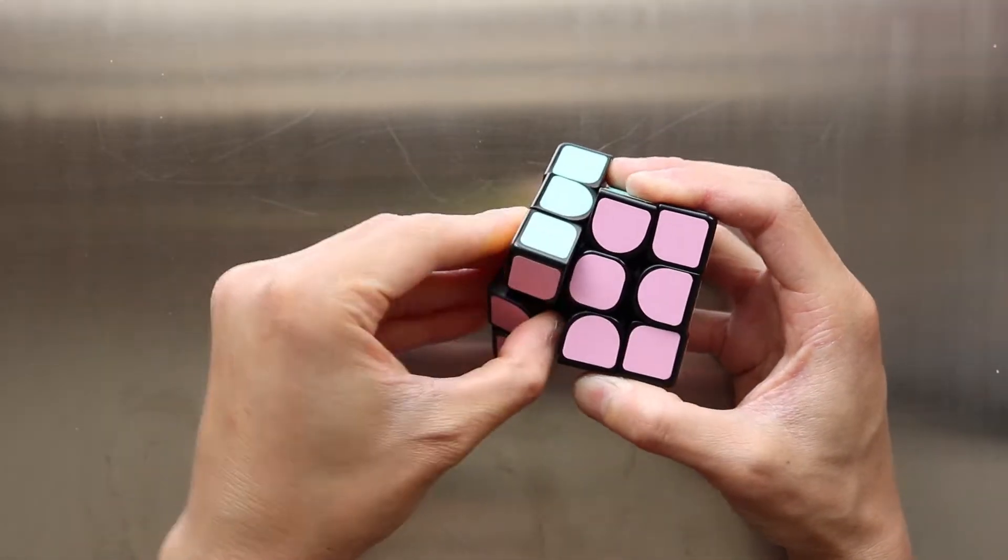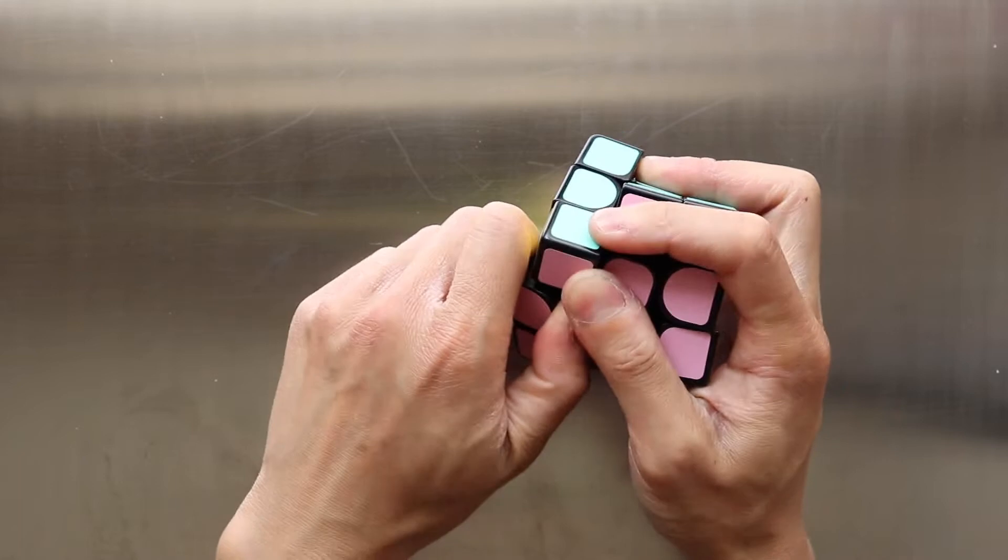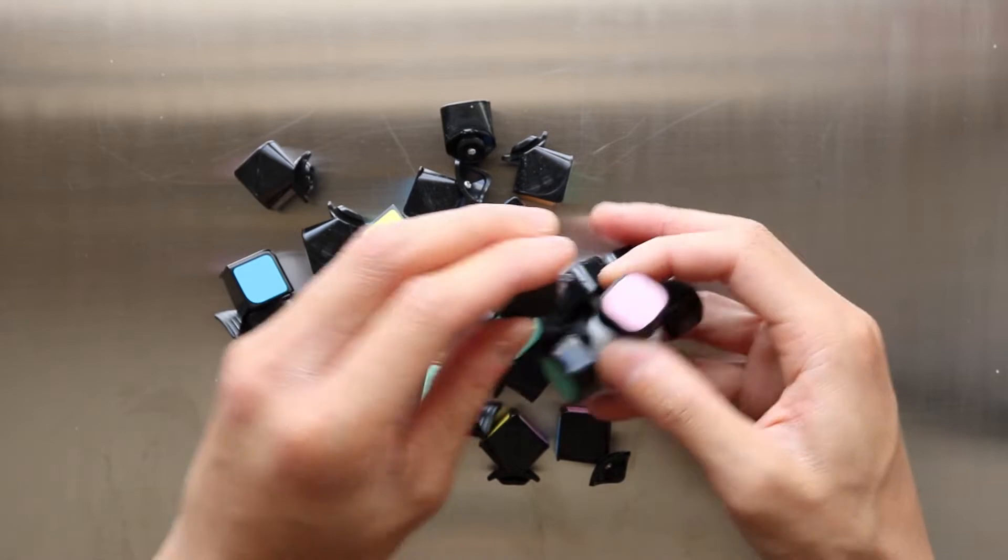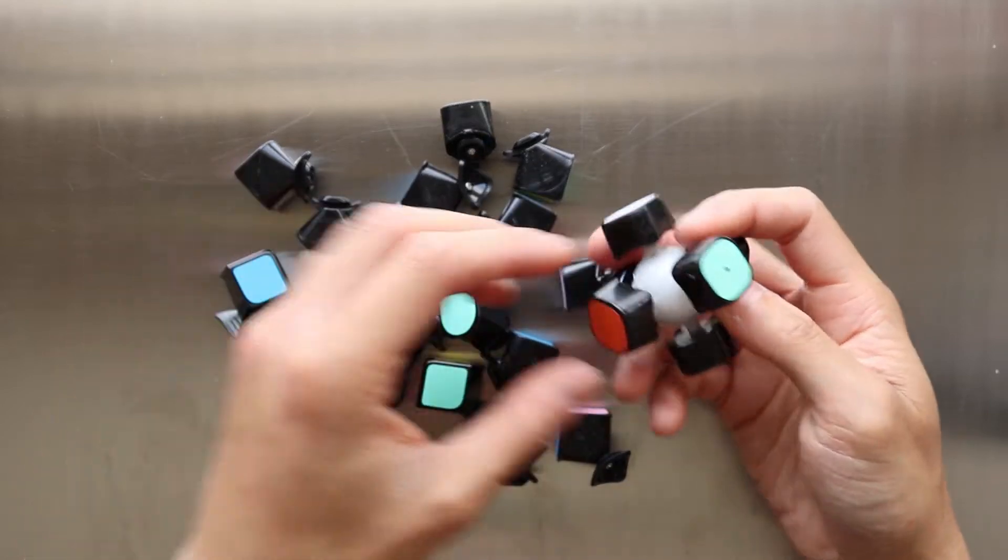So first off, to break the cube apart, I turn one layer by 45 degrees and wiggle the edge piece off. The rest of the pieces come off very easily afterwards, leaving the six center pieces behind.